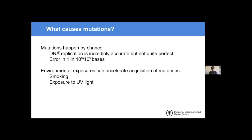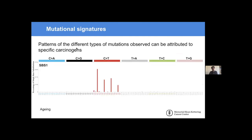What causes these mutations? A lot of the time they happen by chance — DNA replication is incredibly accurate but not quite perfect, so a single base pair mutation might happen in about one in a billion bases. It's also become apparent that environmental exposures can accelerate the acquisition of mutations. For example, if you're a smoker or exposed to lots of UV light, your lungs and skin may accumulate more mutations. This has been a hot topic in recent years, bringing along the concept of mutational signatures.